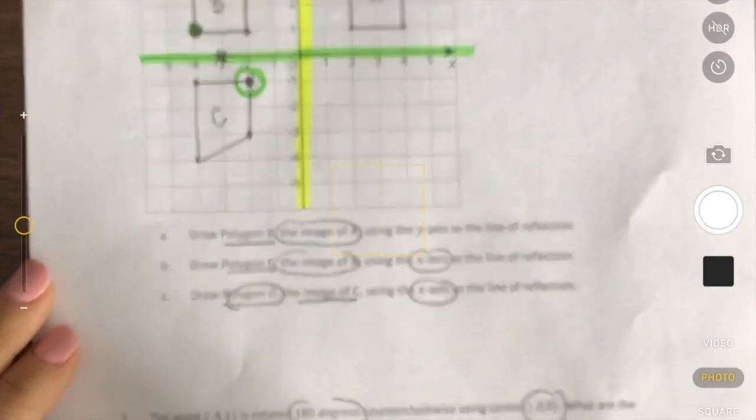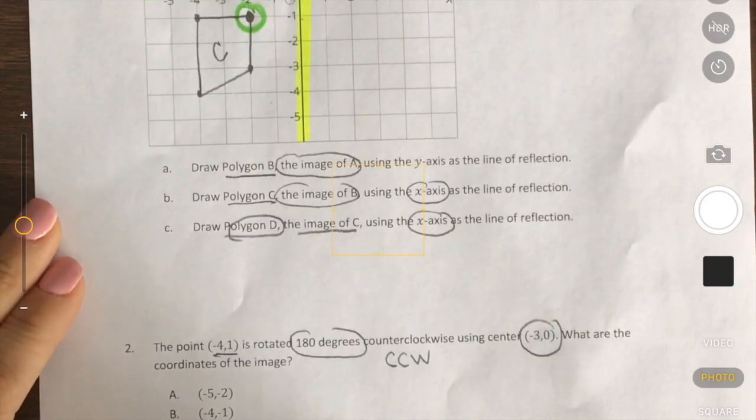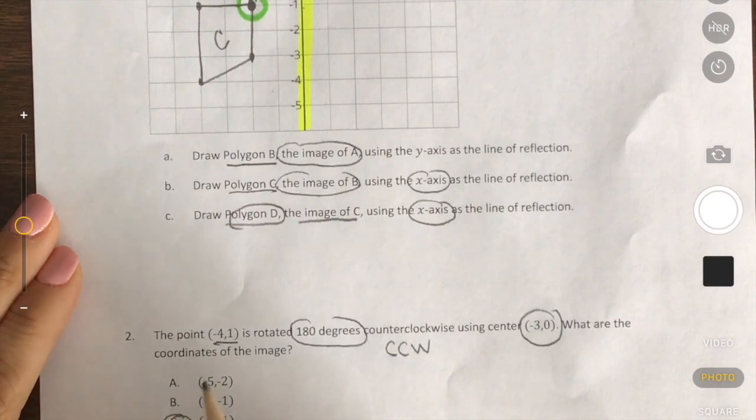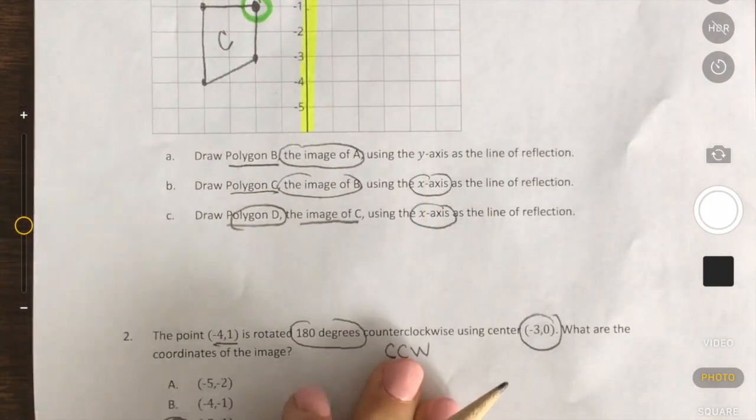Let's see what that point is. So I'm going to end up right here and that point is negative 2, negative 1. So I know that C is my answer, negative 2, negative 1. All right, let's look at number 3.